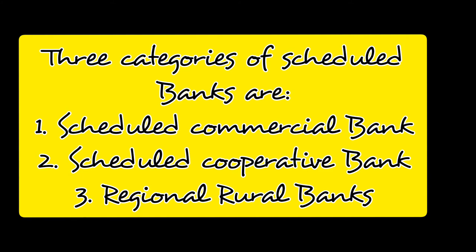The first category is scheduled commercial banks, which includes banks in India as well as foreign banks — for example, normal commercial banks like SBI, Kannada Bank, and Punjab National Bank, whereas foreign banks include Deutsche Bank, Bank of England, and Bank of America. Number 2 is scheduled state cooperative banks, which are run at the cooperative and state level — for example, Apex Bank. Number 3 is regional rural banks, which are based in rural areas and every state has their own rural banks.